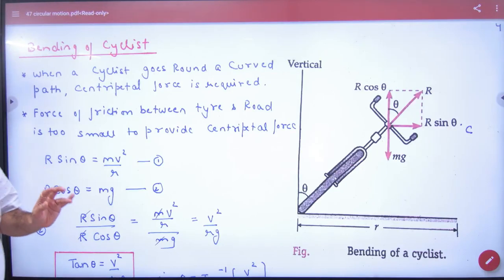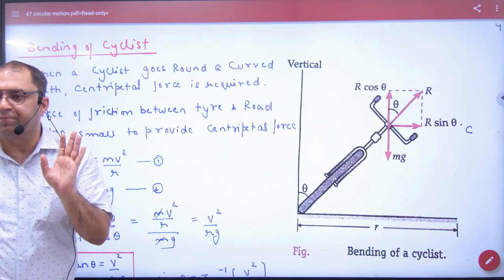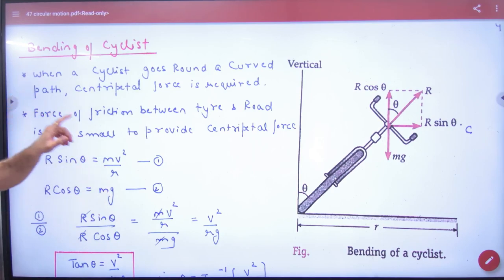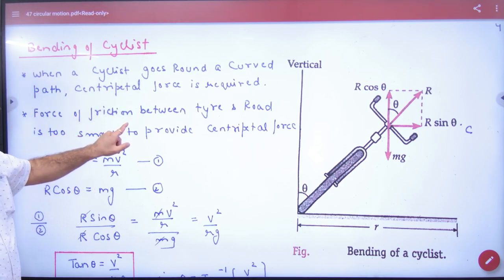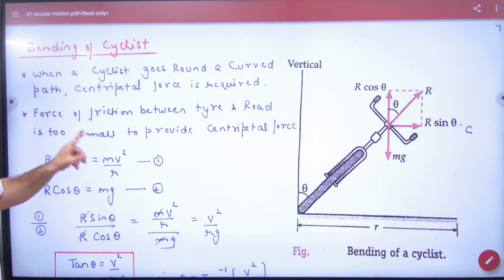Bending of cyclists - important note. When a cyclist goes around a curved path, centripetal force is required. The force of friction between tire and road is too small.